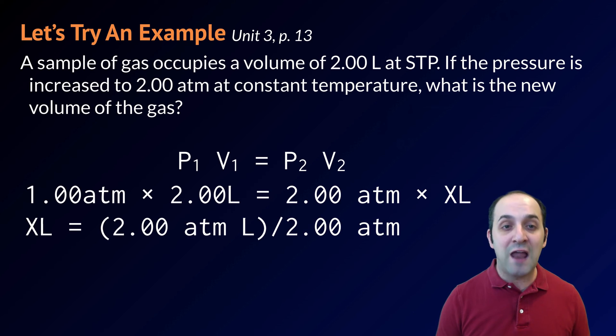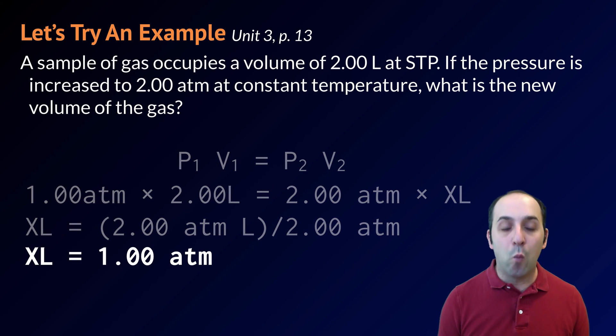Rearranging this for x, I'll get that x is equal to 2.00 atmospheres, or the products of the left side of my initial equation, divided by 2.00 atmospheres. Doing this math, I get 1.00 atmospheres as my final answer.